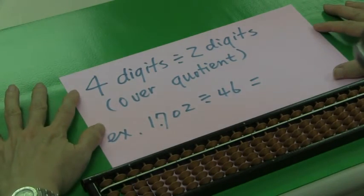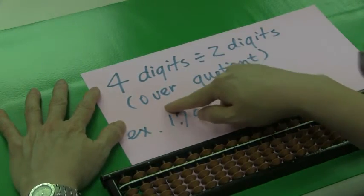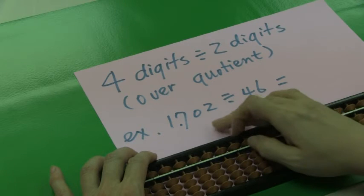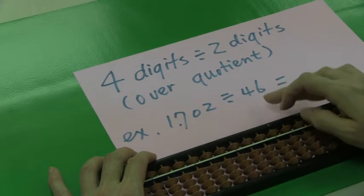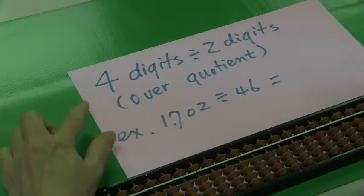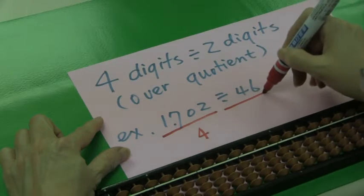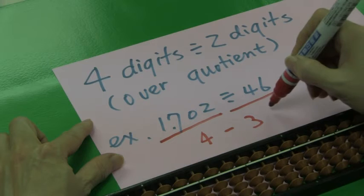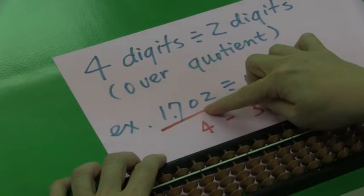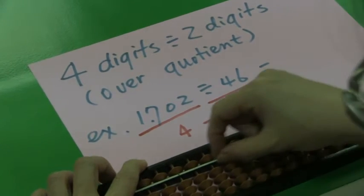Now we are going to learn how to do division, four digits divided by two digits, also with over-quotient in it. Example is 1,702 divided by 46. First, we need to place the dividend. Four digits, four, subtract three. It's one. We then know we should place the dividend in the unit's row. Let's try this question.